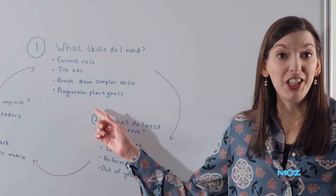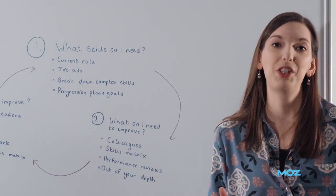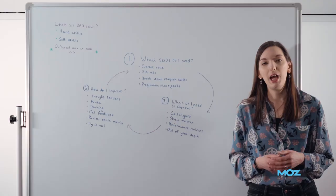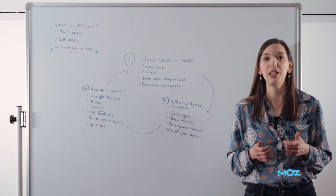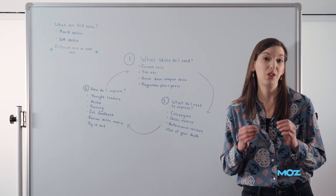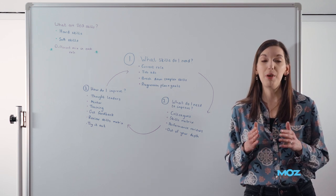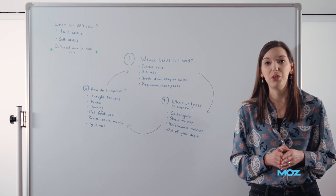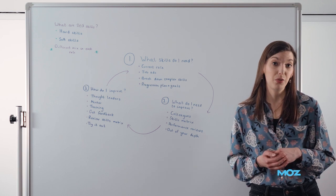And then finally, speak to your manager, get them to give you a progression plan, set some goals for you, help them to identify what skills you need for your current role, what they're expecting you to excel at. And that will help you to come up with a total list of all the skills that you might need in your current and future roles.